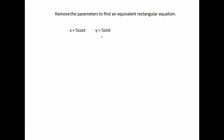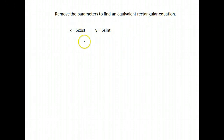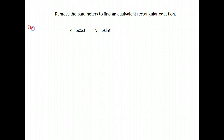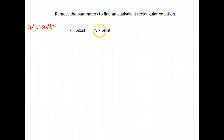We're going to do one more of those that comes out a little bit differently. Again, we're asked to remove the parameters and find the equivalent rectangular equation, which means get rid of those t's and just have x's and y's left. Again, we notice we have cosine t and sine t. So we're going to try to get cosine squared plus sine squared so that we can write that as a one and not have the t's there. To accomplish that goal, I need a cosine squared and a sine squared, and right now they're not squared.